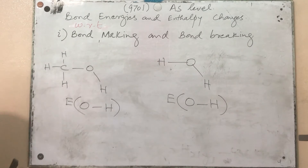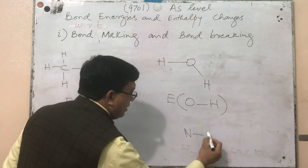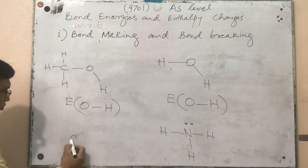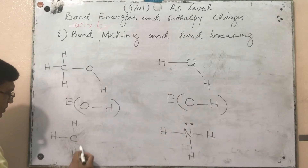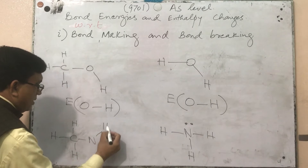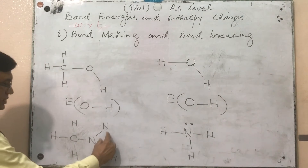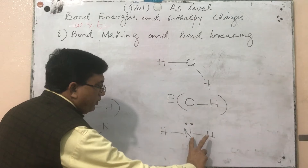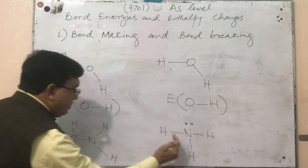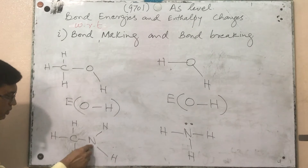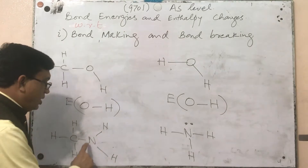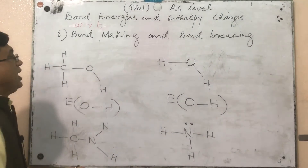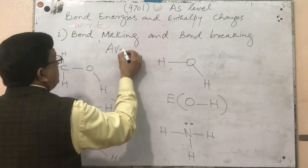Similarly, in ammonia, nitrogen is bonded with three hydrogen atoms. But in methylamine, the same N–H bond exists, however nitrogen is also bonded to a carbon atom. The bond energy of N–H in ammonia will differ from N–H in methylamine due to the different chemical environment. That is why, instead of using a single bond energy, we use average bond energies.